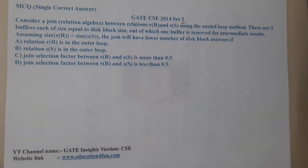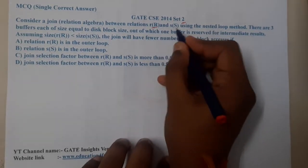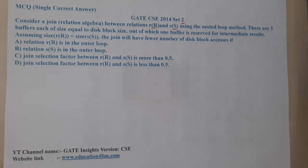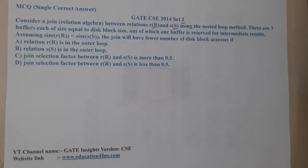The given question is: consider a join relational algebra between relations R and S using the nested loop method. There are three buffers, each of size equal to the disk block size, out of which one buffer is reserved for intermediate results. Assume that size(R) is less than size(S).